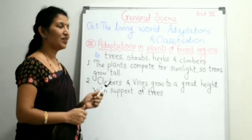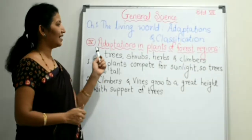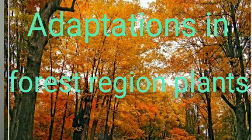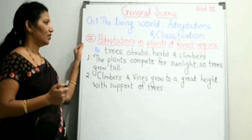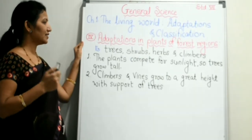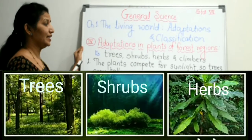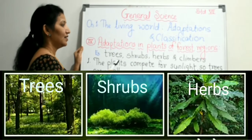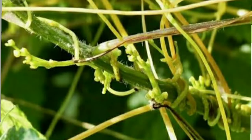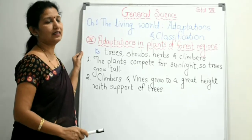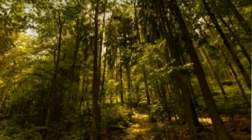Children, come on let us study adaptations in plants of forest regions. The examples of these forest region plants are: there are many trees, many types of shrubs, herbs and climbers. All types of plants are found in these forest regions.